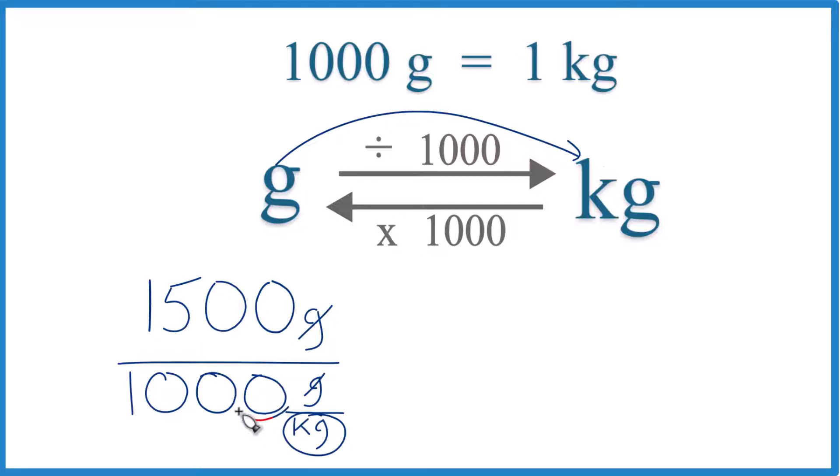Let's move our decimal place one, two, three. So this is just one, and then one, two, three. We end up with 1,500 grams equals 1.5 kilograms.